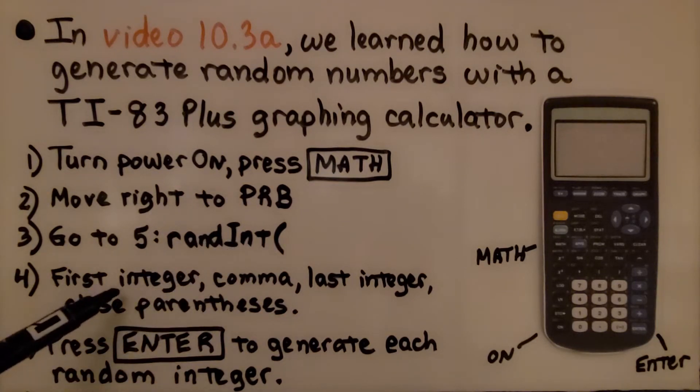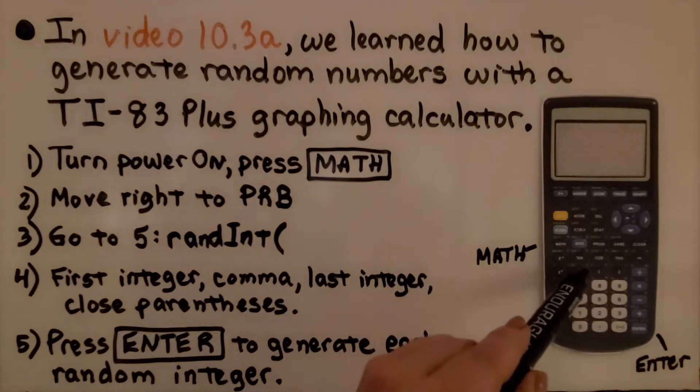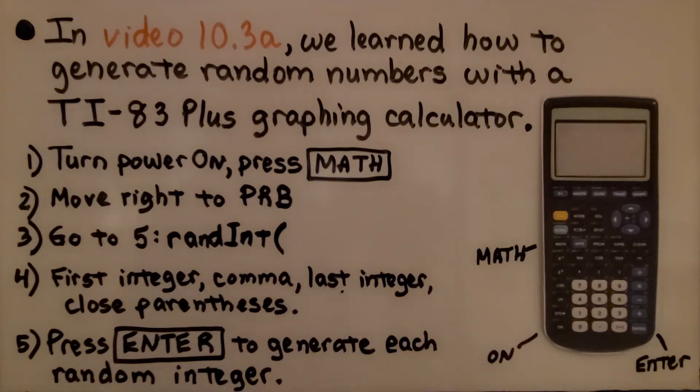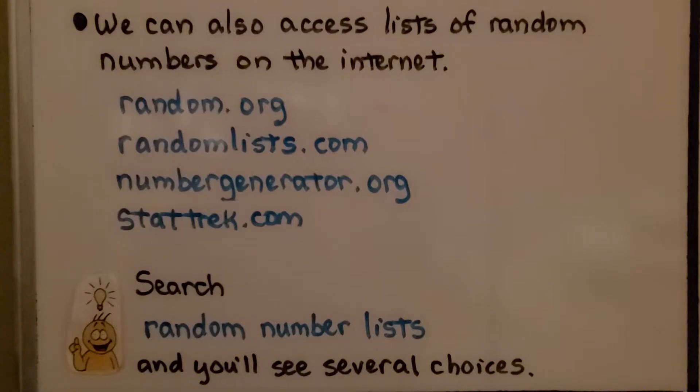We're going to put in the first integer, then hit comma, which is right here. Then we're going to put in the last integer, and then hit close parentheses. Then, we press Enter, which is over here, to generate each random integer. You'll have to push Enter over and over again.